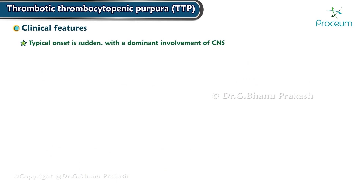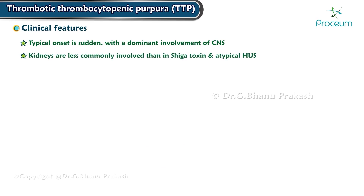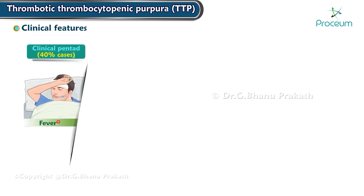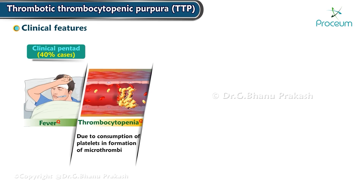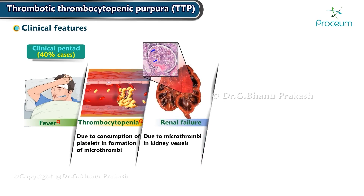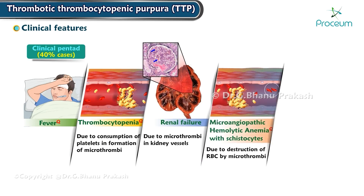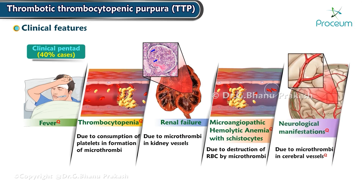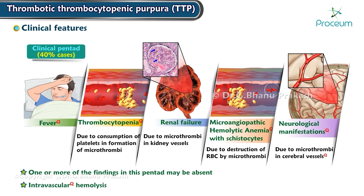The onset is typically sudden with dominant involvement of the central nervous system. The kidneys are less commonly involved than in shiga toxin and atypical HUS. The clinical pentad includes: fever; thrombocytopenia due to consumption of platelets in microthrombi formation; renal failure due to microthrombi deposition in kidney vessels; microangiopathic hemolytic anemia with schistocytes due to destruction of RBCs by microthrombi; and neurologic manifestations due to microthrombi in cerebral vessels, seen in about 40% of cases. One or more findings of this pentad may be absent, and there is intravascular hemolysis.